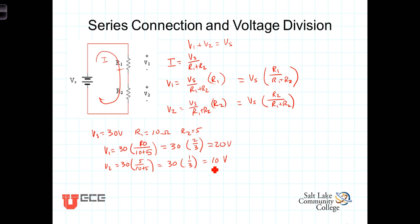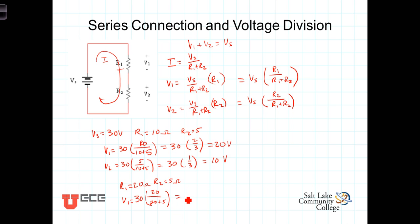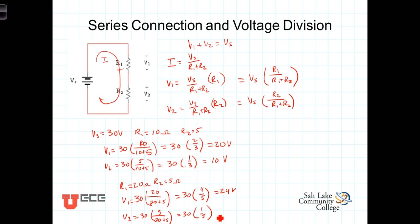Now let's hold R2 constant at 5 ohms and increase R1 to 20 ohms. V1 is equal to the 30 volts times R1, which is now 20 ohms, divided by the sum R1 plus R2, where R2 is still 5 ohms. So the total resistance is now 20 plus 5, and V1 equals 30 times 20 over 25, that's four-fifths, or 24 volts. And V2 equals 30 times 5 over 25, or 30 times 1 fifth, which is equal to 6 volts.